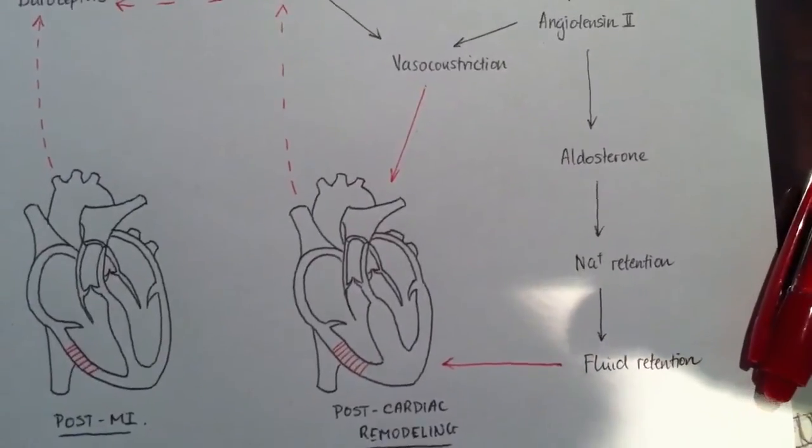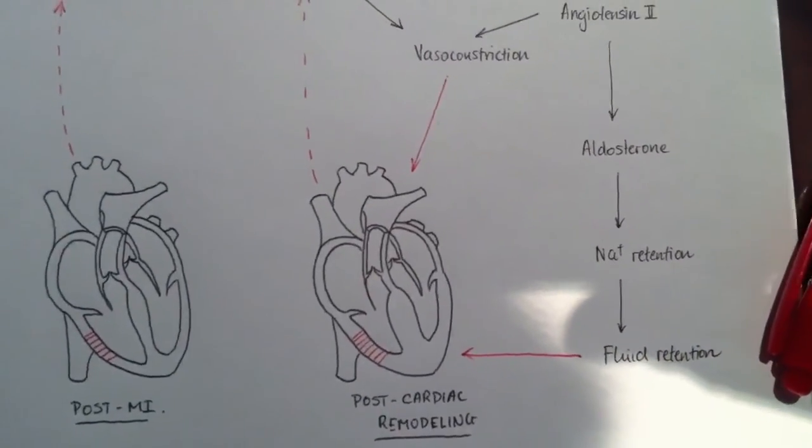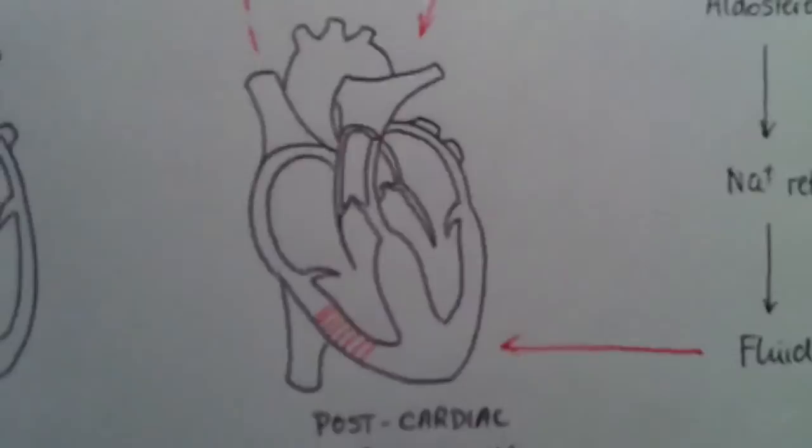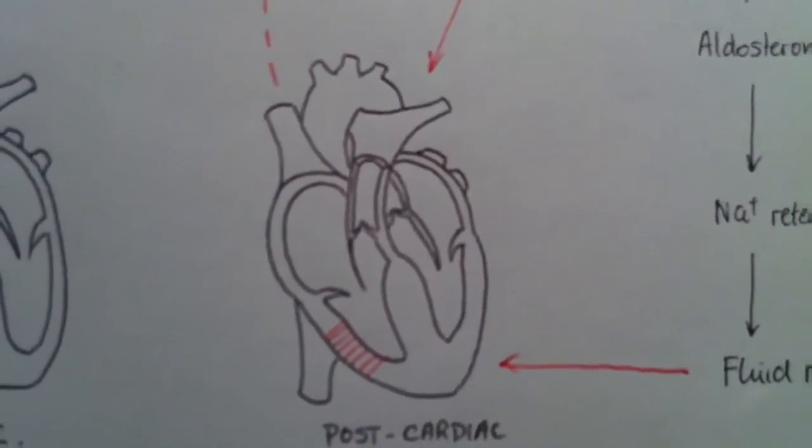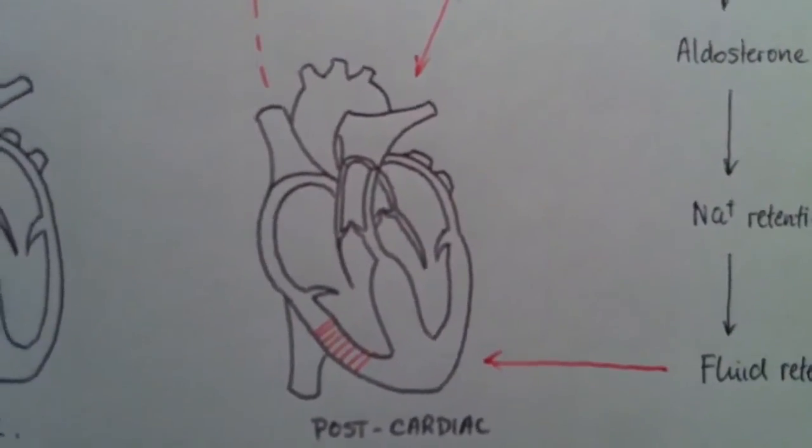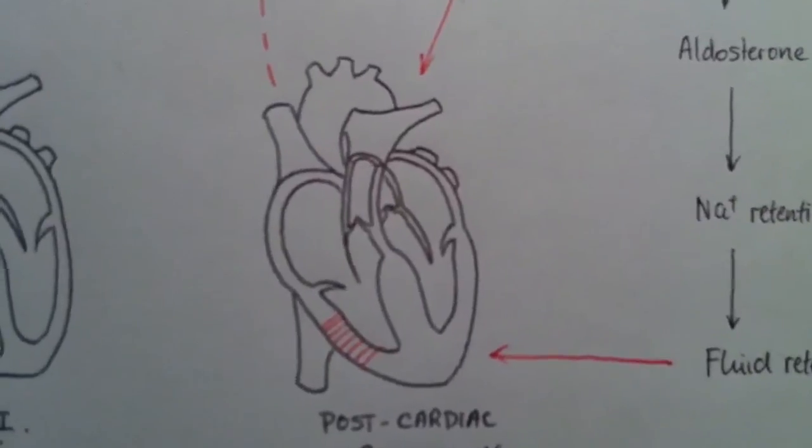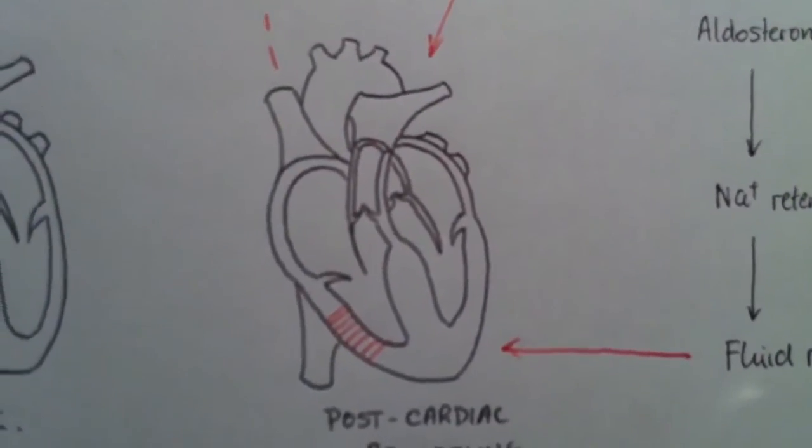So, the heart has to compensate for this, and compensate for its dead cells by enlarging its ventricle walls. But as it enlarges its ventricle walls, the volume it can hold is now reduced.